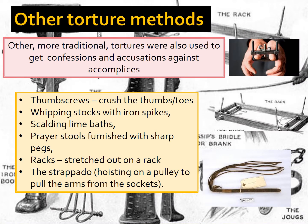Other more traditional torture methods were also used to get confessions and accusations against witches and accomplices. These included thumbscrews — used to crush your thumbs and toes to force a confession — whipping stocks with iron spikes, scalding lime baths, prayer stools furnished with sharp pegs, racks where your hands and feet would be tied and you would be stretched out, and the strappado, which hoisted suspects on a pulley to pull the arms from their sockets.